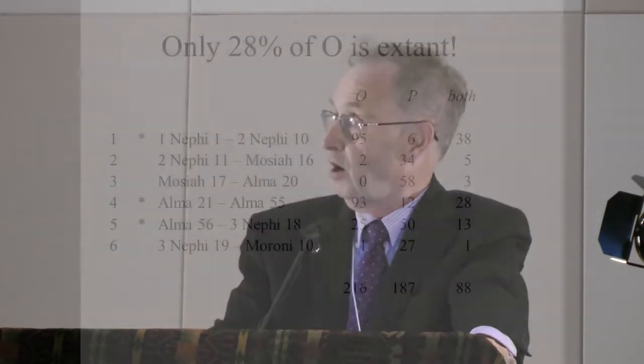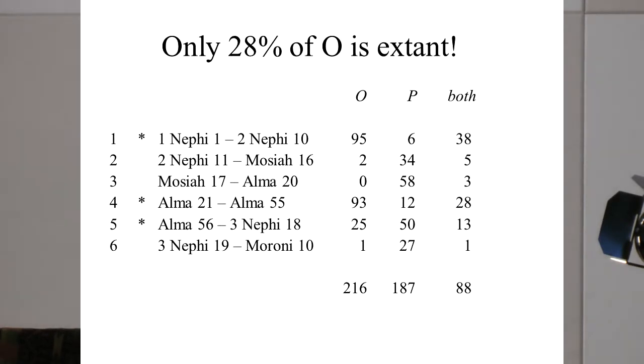It's pretty heady to see these, and you think, yeah, we can figure out what the original text of the Book of Mormon was. But I was working with 1 Nephi and a little bit of 2 Nephi, and all of a sudden I realized — where's the rest of it? Only 28% of the original manuscript exists, because Joseph Smith put it in the cornerstone of the Nauvoo house in 1841, and it was there for 41 years. Mold and water damage did their job.